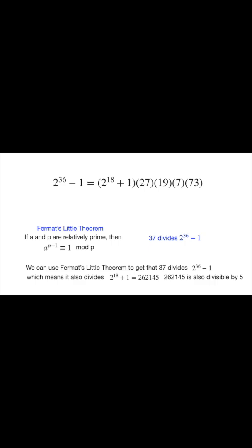So it's got to divide 2 to the 18 plus 1, which we find is 262,145. 262,145 ends in 5, so it's also divisible by 5.